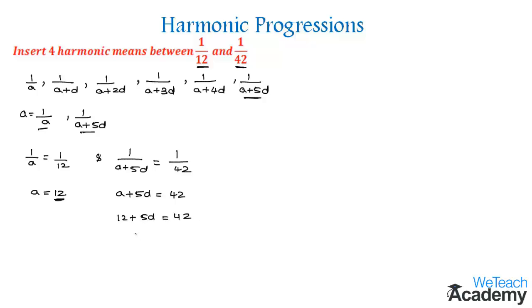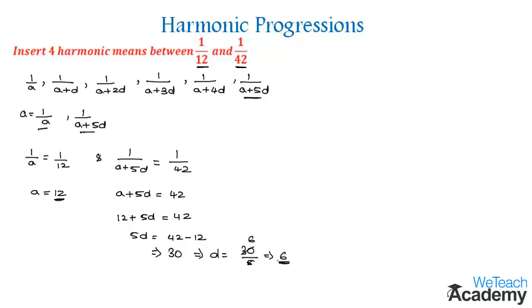Transferring 12 to the other side gives 5d = 42 − 12 = 30. Dividing both sides by 5, we get d = 30/5 = 6. So the value of d is 6.